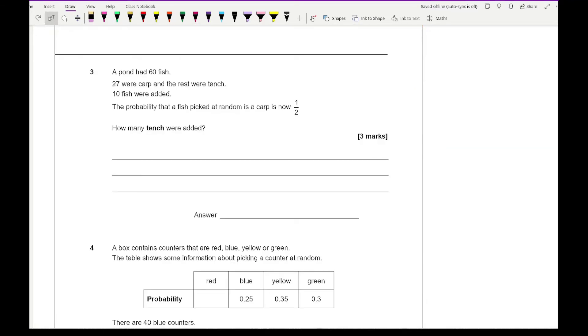Question 3 reads that a pond has 60 fish, 27 were carp, and the rest were tench. 10 fish were added. The probability that a fish picked at random is a carp is now a half. How many tench were added? Well, let's have a look at the situation. So here we've got 60 fish in total. We've got that 27 were carp, and the rest were tench, which gives us 33 were tench. Now it says 10 fish were added, so we've now got 70 fish. It says that the probability that a carp is picked at random is now a half, which means that half of the 70 must be 35. So we've now got 35 carp, which means that we've added 8. So that means we added 2 tench, which means that there are now 35 tench. The answer then is going to be 2.